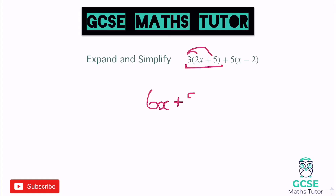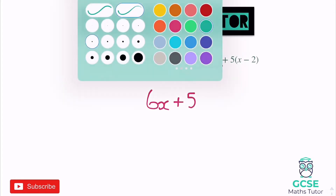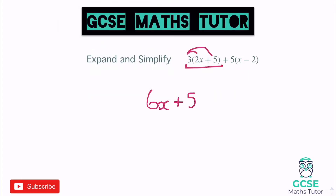Now looking at the second bracket, we've got a positive 5 at the front. Expanding by positive 5: 5 times x is positive 5x, and positive 5 times negative 2 is negative 10. Be very careful with the signs here — that is a negative 2, so that makes negative 10.